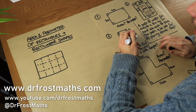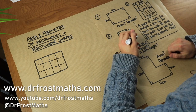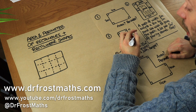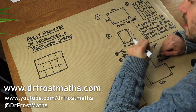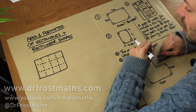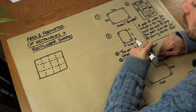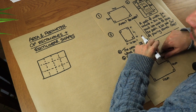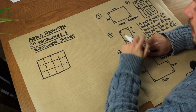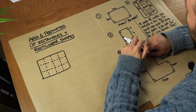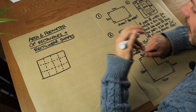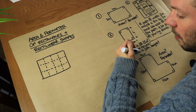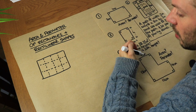Hello and welcome to this video on the area and perimeter of rectangles and other rectilinear shapes. By rectilinear shapes I just mean shapes where all the angles are right angles. Now let's suppose I'm trying to find the area of this rectangle here — you might understand area as a notion of how much space something takes up in two dimensions.